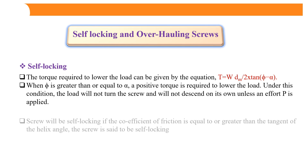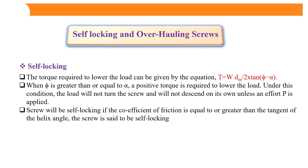A screw will be self-locking if the coefficient of friction is equal to or greater than the tangent of the helix angle. That is, tan φ ≥ tan α, which means φ ≥ α — the screw is said to be in self-locking condition.